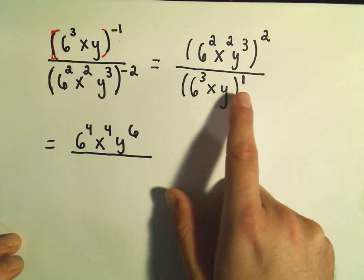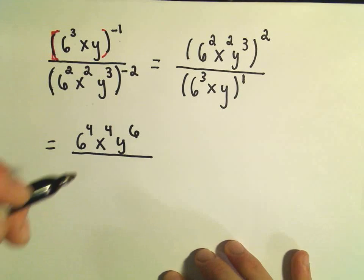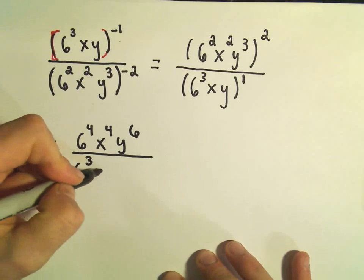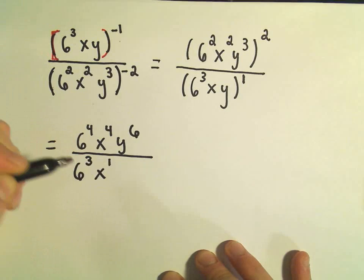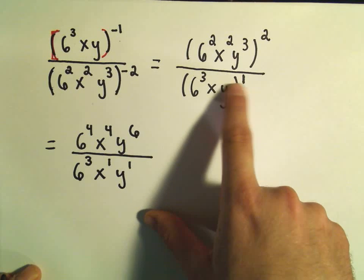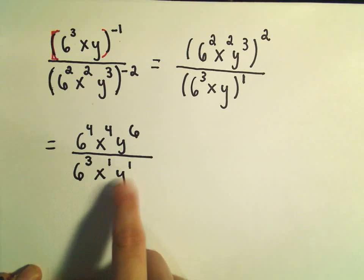And in the denominator, anything raised to the first power is just itself. So we'll just be left simply with 6 to the third. And I'm going to put some exponents in here, x to the first, y to the first. Okay, and if you multiply 3 and 1, 1 and 1, 1 and 1, you'll get the correct exponents.